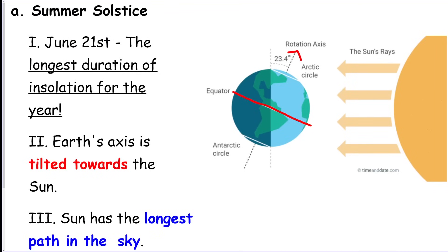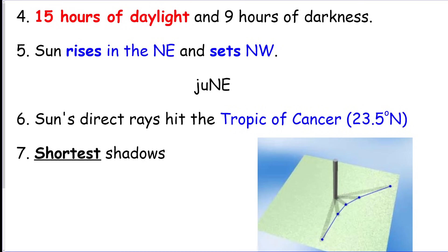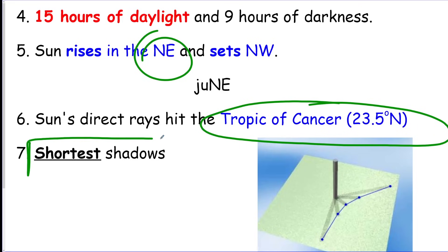Now you have to know all the facts about the seasons. So June 21st, longest duration of insolation, we're tilted towards the Sun, we have the longest path in the sky. You should know 15 hours a day, 9 hours a night. We need to know the sunrise in June is northeast, and the Sun's direct rays are hitting the Tropic of Cancer. You're literally just going to have to remember this, so you might have to make flashcards. We also have the shortest shadows because the Sun is highest in the sky.